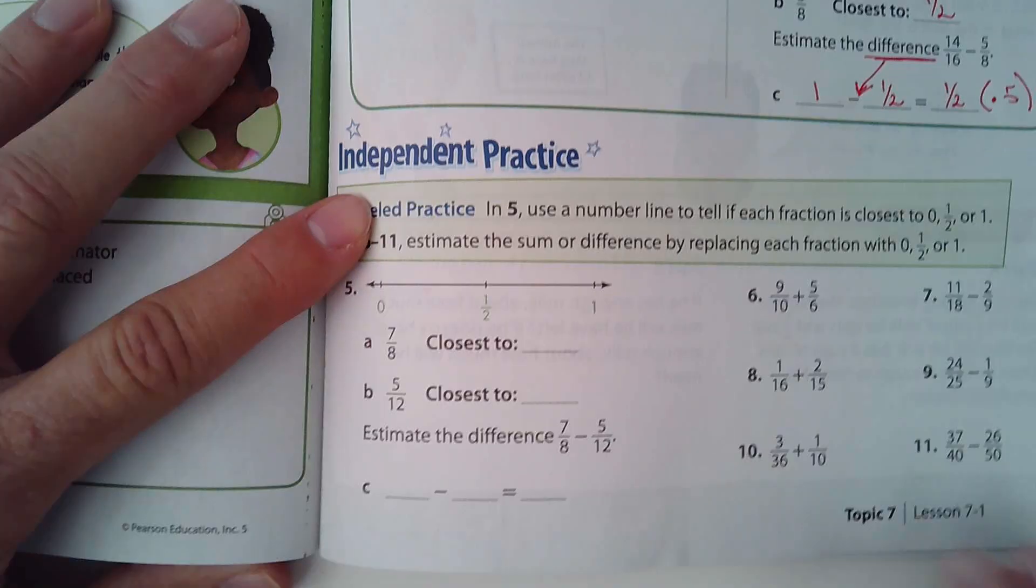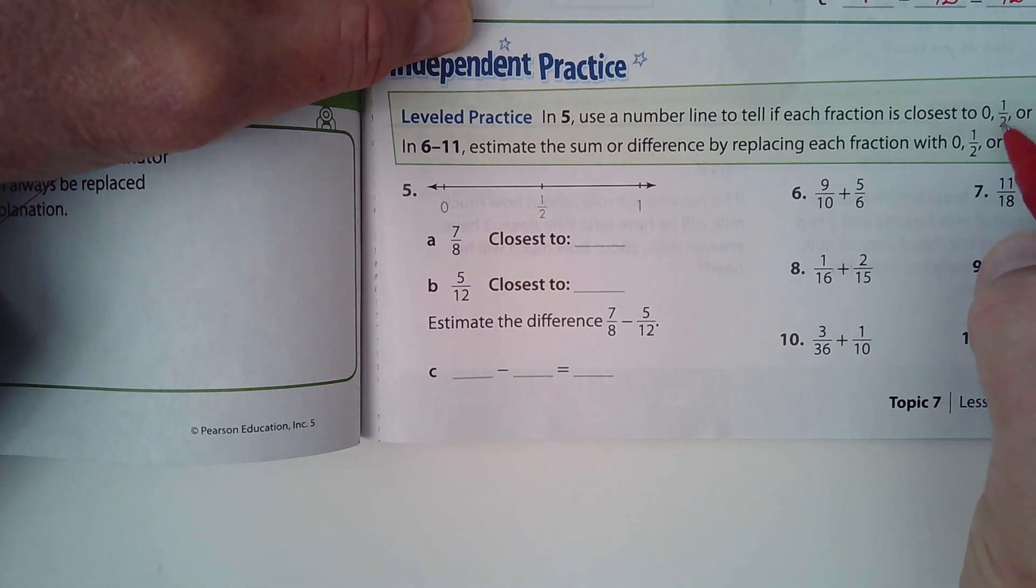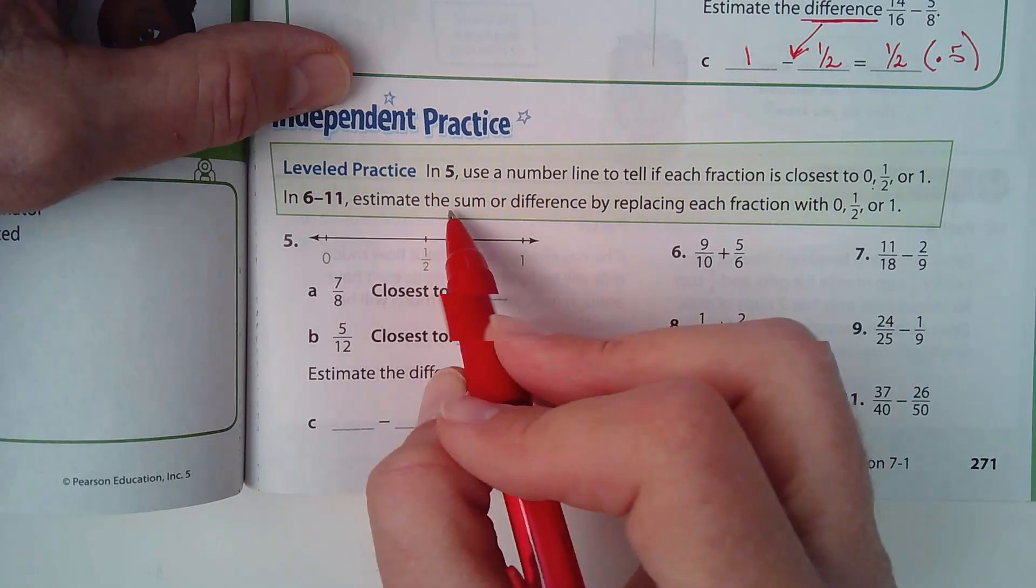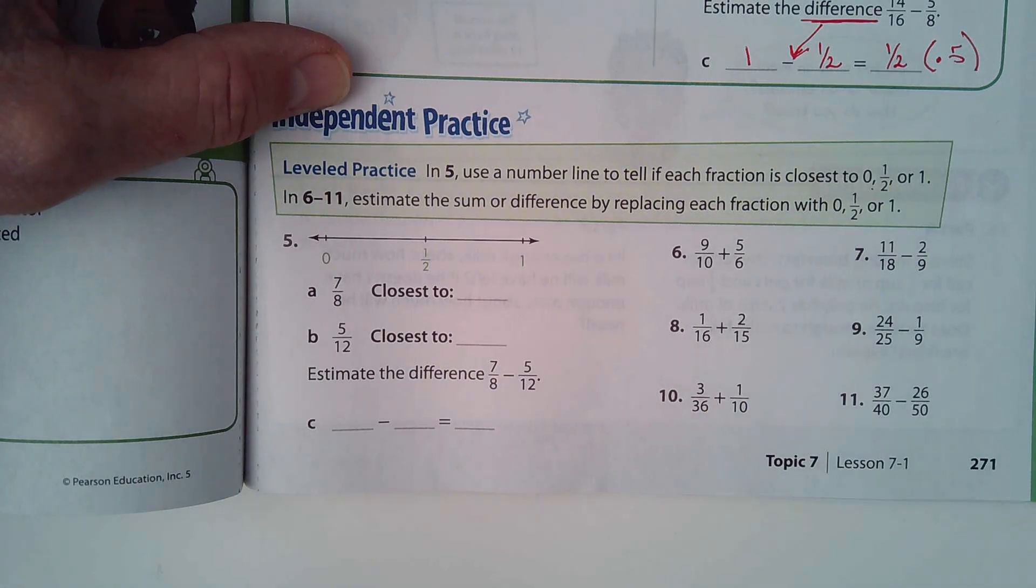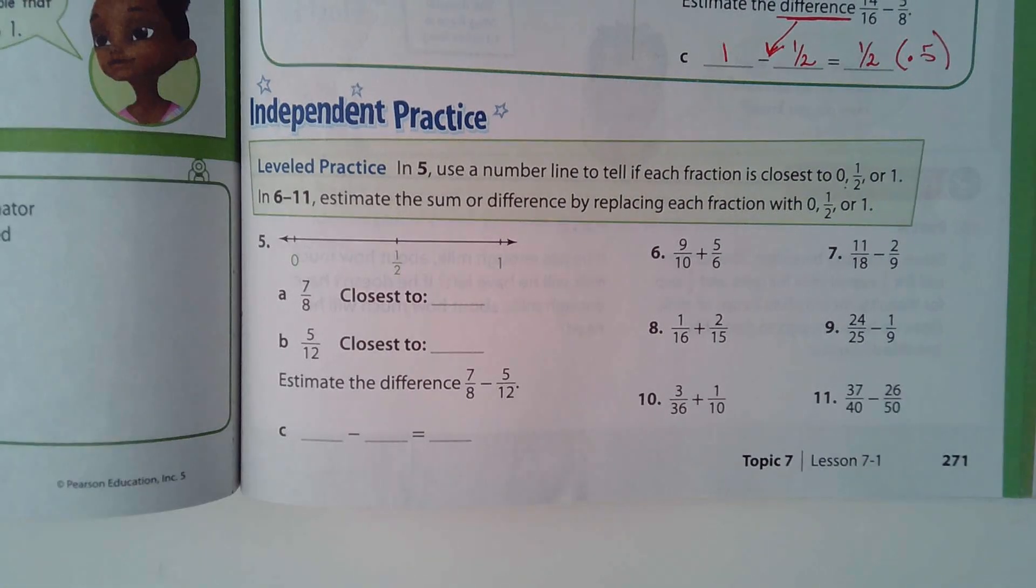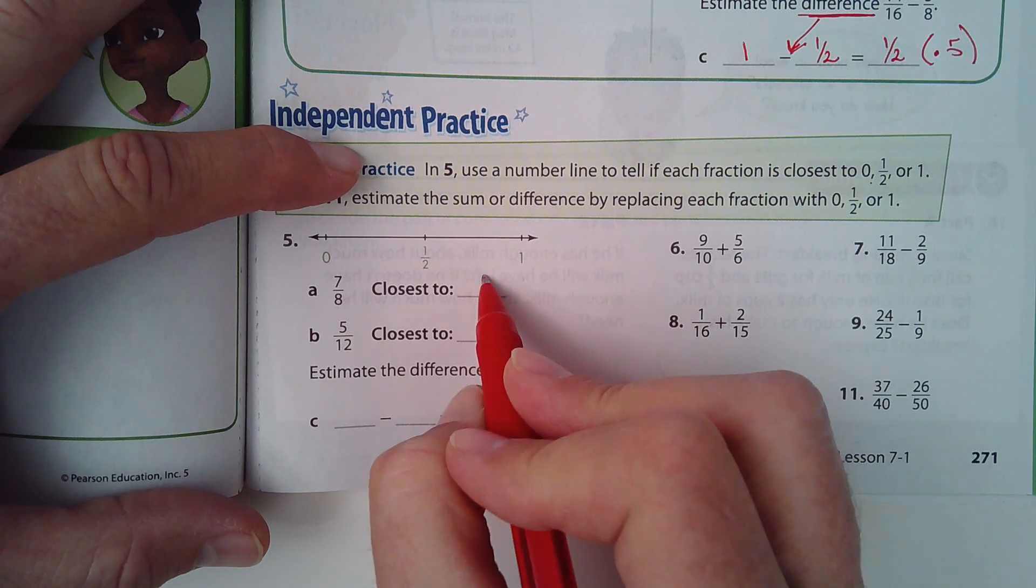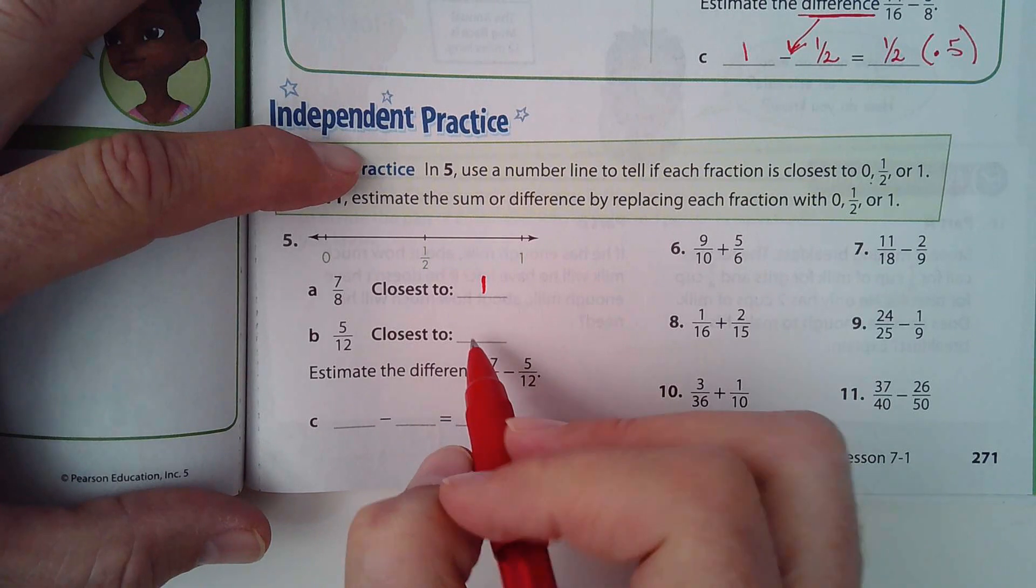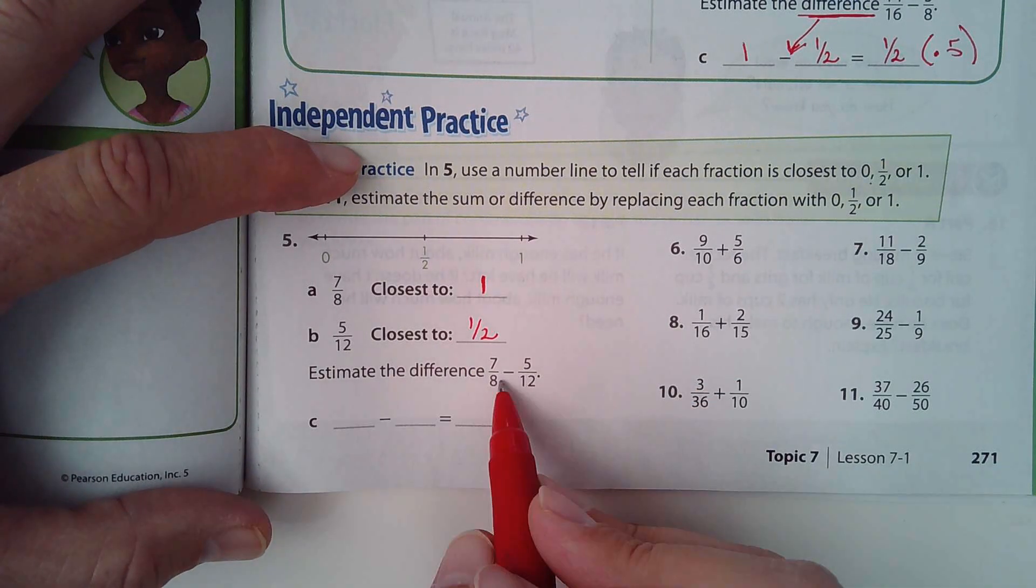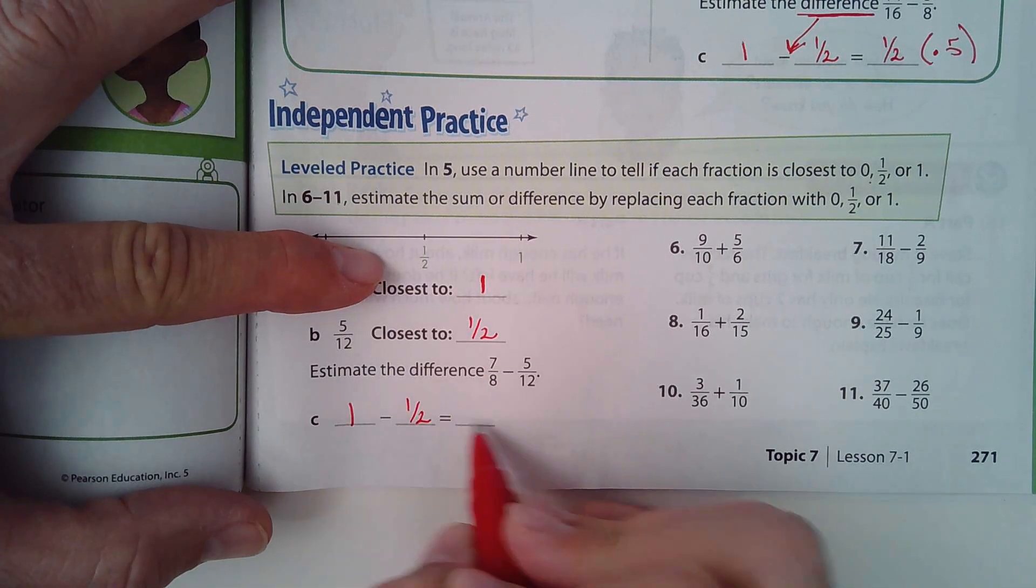Down at the bottom of the page, it says in five, use a number line to tell if each fraction is closest to zero, one-half, or one. And then in six through eleven, estimate the sum or difference by replacing each fraction with zero, one-half, or one. So, seven-eighths is closest to one. Five-twelfths is closest to a half, because five-twelfths is really close to six-twelfths, which is the same thing as one-half. And then it says, estimate the difference. So it'd be seven-eighths subtracting five-twelfths, so that's one subtracting one-half, and that's going to be one-half.